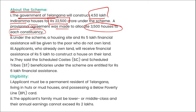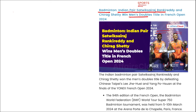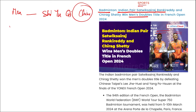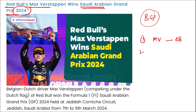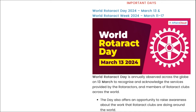In Formula 1, Max Verstappen (Red Bull) won the Saudi Arabian Grand Prix 2024. Sergio Perez (Red Bull) finished second and Charles Leclerc (Ferrari, Monaco) third. Max Verstappen had also won the Bahrain Grand Prix.